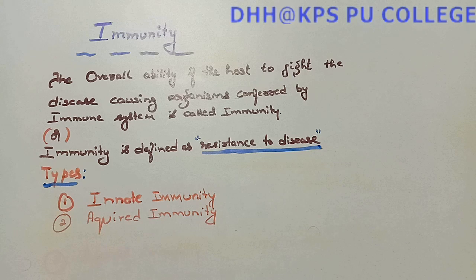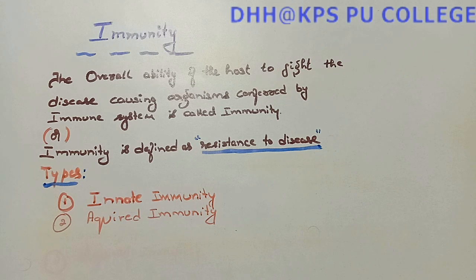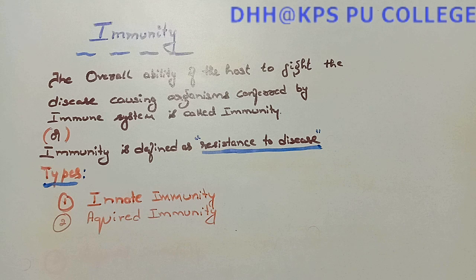So what is innate immunity? Innate immunity is the natural defense system of the body which is present at the time of birth. It is non-specific because it gives a generalized effect against a wide range of microorganisms. The effect of innate immunity may vary from person to person.